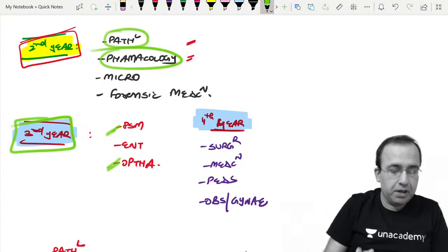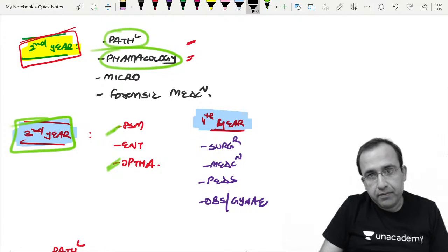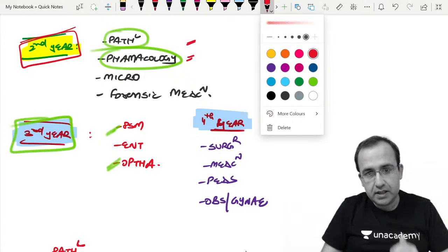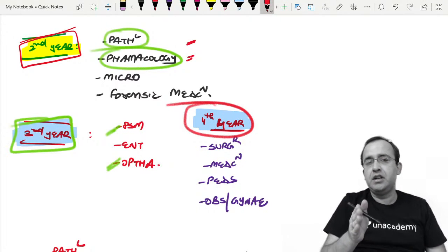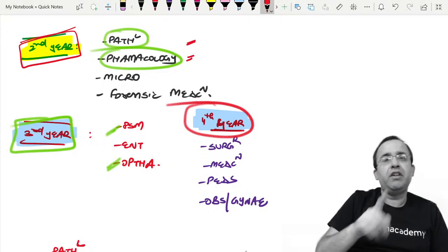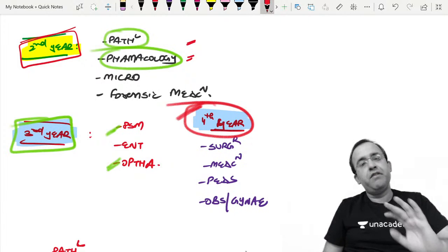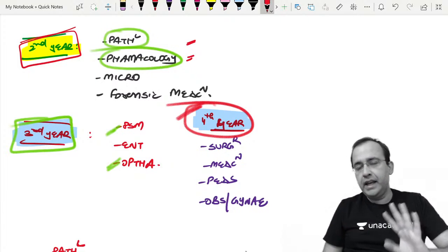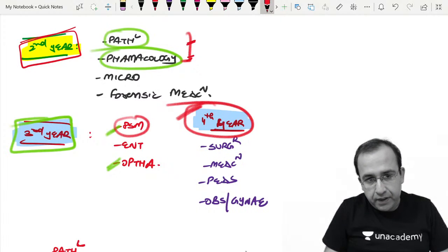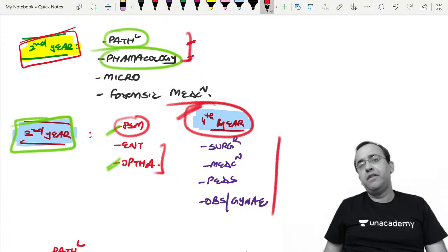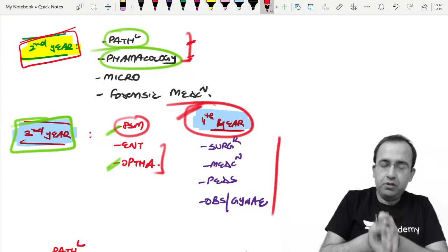The current fourth years - this is dire time for you because you will be the first or second batch who will be giving NEXT, depending on whether you have a five year course or six year course. You guys will be the first or second batch giving the NEXT exam. In NEXT, you will of course have questions from basics, PSM, ENT, Ophtha, and the major chunk of final year. Forget everything, start studying - you will have to put in slightly more number of hours.